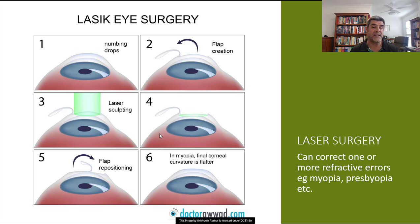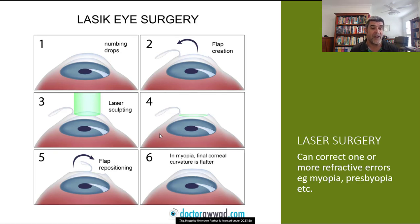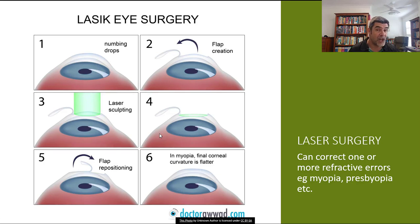Here is a six-step overview of the laser surgery process: numbing drops are applied, a flap in the cornea is opened, the laser sculpts the cornea by changing its shape, and then the flap is replaced. Eventually the eye heals, leaving a slightly changed corneal surface as a result of the surgery.